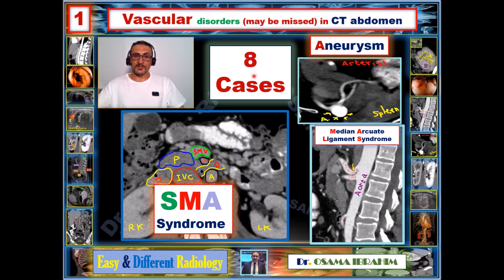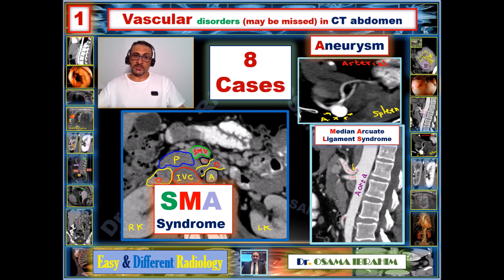Welcome to Easy and Different Radiology. I am Dr. Osama Abrahim, and this is your channel Easy and Different Radiology, which talks about all things related to radiology. Today I decided to start a new set of gastroenterology disorders. The first video will talk about vascular disorders which may be missed during CT abdomen examination, including SMA syndrome, splenic arterial aneurysm, and median arcuate ligament syndrome. I will discuss eight cases from my daily work over the previous two months.